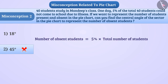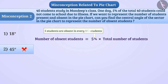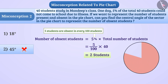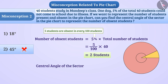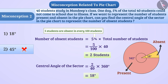Here we are given the percentage of absent students. 5 percent means 5 students are absent in every 100 students. So 5 divided by 100 multiplied by 40 equals 2 students out of 40. If we represent the total 40 students as a whole circle, the central angle for 2 absent students is 2 divided by 40 multiplied by 360 degrees, which equals 18 degrees. So the correct answer is option 1.